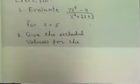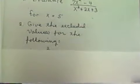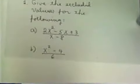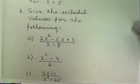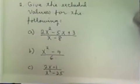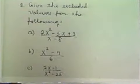The second one, give the excluded values for the following and I'm going to give you three problems to give the excluded values for. So again the directions, give the excluded values for the following and then the problems: a, 2x squared minus 5x plus 3 divided by x minus 8.